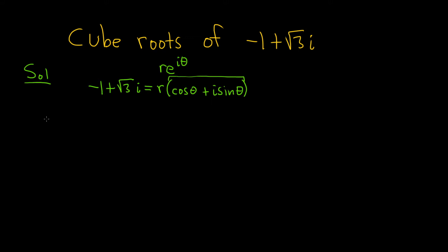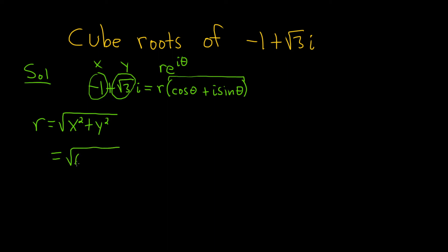Now we're going to find r. So r is equal to the square root of x squared plus y squared. In our problem, x is negative 1 and y is the square root of 3. So this is the square root of negative 1 squared plus the square root of 3 squared, which equals the square root of 1 plus 3, which is the square root of 4, equal to 2. So our modulus r is 2.